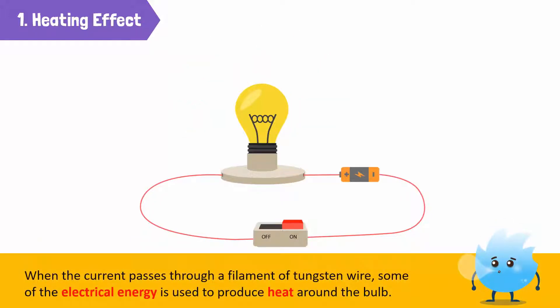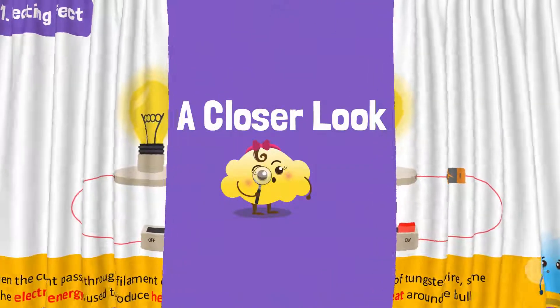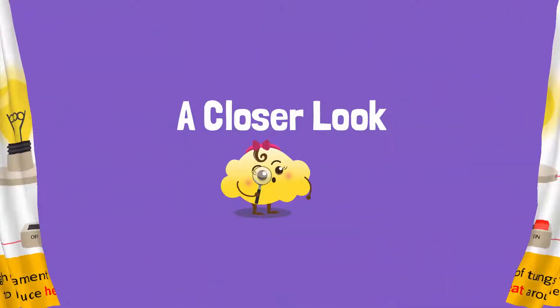When the current passes through a filament of tungsten, a rare element used to make the wire in bulbs, some of the electrical energy produces heat around the bulb. This is called the heating effect of electric current. Let's take a closer look to understand how this happens.